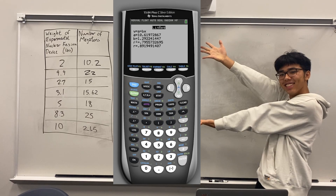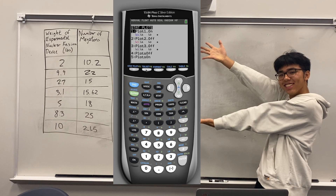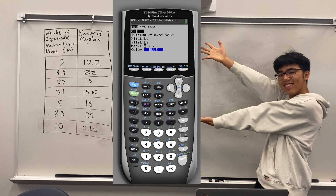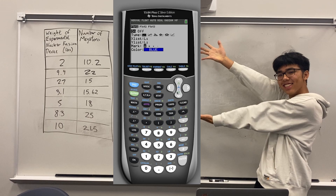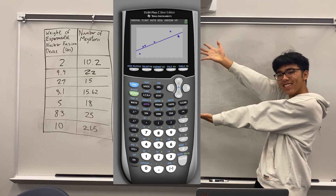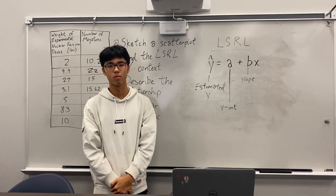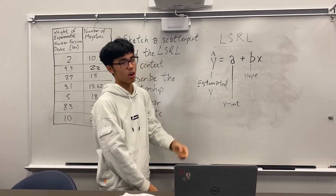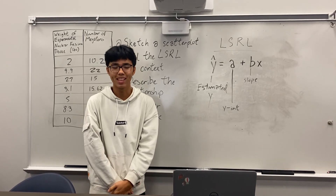You can use this to interpret your data. To graph, press 2nd Y= . If your stat plot is not already on, press ENTER and turn on your stat plot. Make sure the scatter plot is set as your graph type. Now press ZOOM 9 for zoom stat. This is the LSRL: y-hat equals a plus bx.